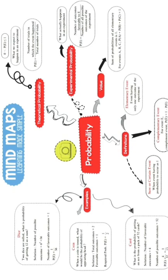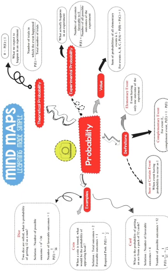The second type is theoretical probability. What we expect to happen in the experiment is theoretical probability. In experimental or empirical probability, what is actually happening gives the experimental probability. Whereas in theoretical probability, what we expect to happen in the experiment is given by the theoretical probability. The theoretical probability is also given by the formula: P(E) = number of trials in which the event happened, divided by total number of trials.